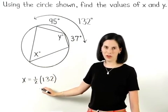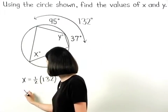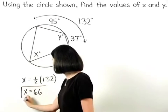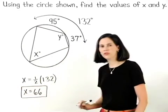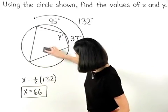One-half times 132 is 66, so x equals 66, which means that we can replace the x in our diagram with 66.